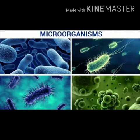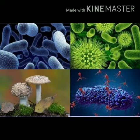Microorganisms are classified into four major groups: mainly bacteria, fungi, protozoa, and algae. Some microorganisms are unicellular like bacteria, while some have a well-developed multicellular body like a mold.